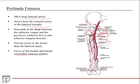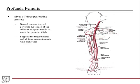The profunda femoris gives off the medial and lateral circumflex femoral arteries — these provide blood supply to the hip joint and proximal femur. It also gives off three perforating arteries, which are actually named. They are named because they all perforate the tendon of the adductor magnus muscle to reach the posterior thigh, and they all form an anastomosis with each other to help with collateral circulation.